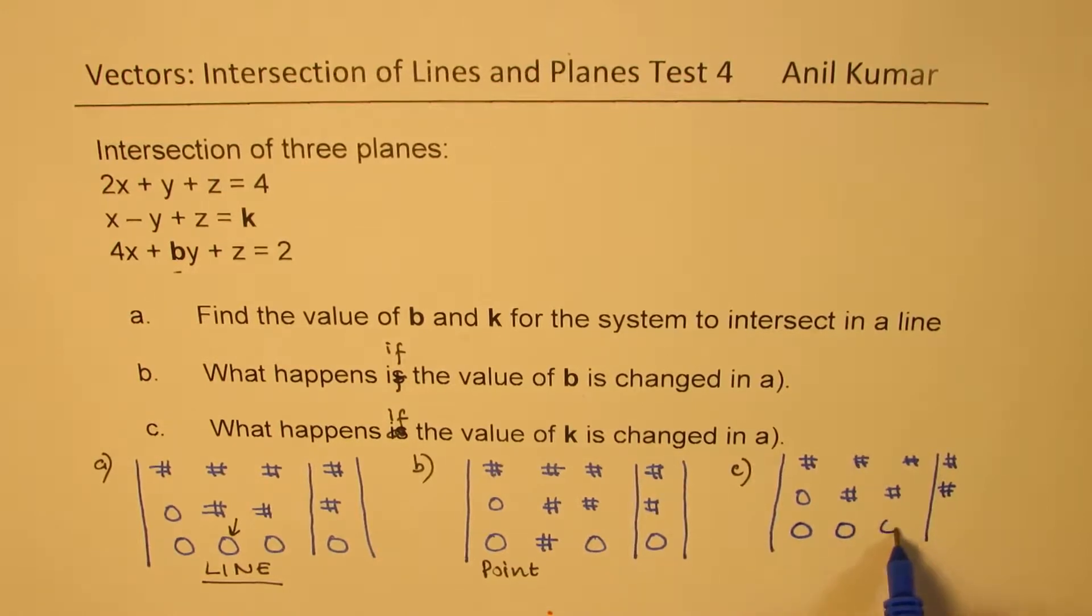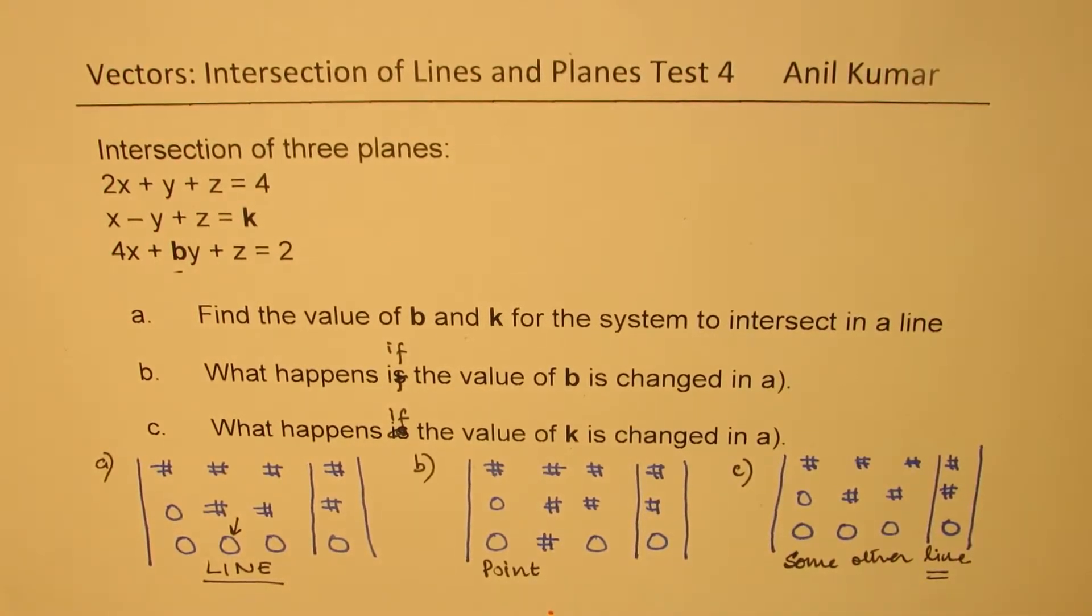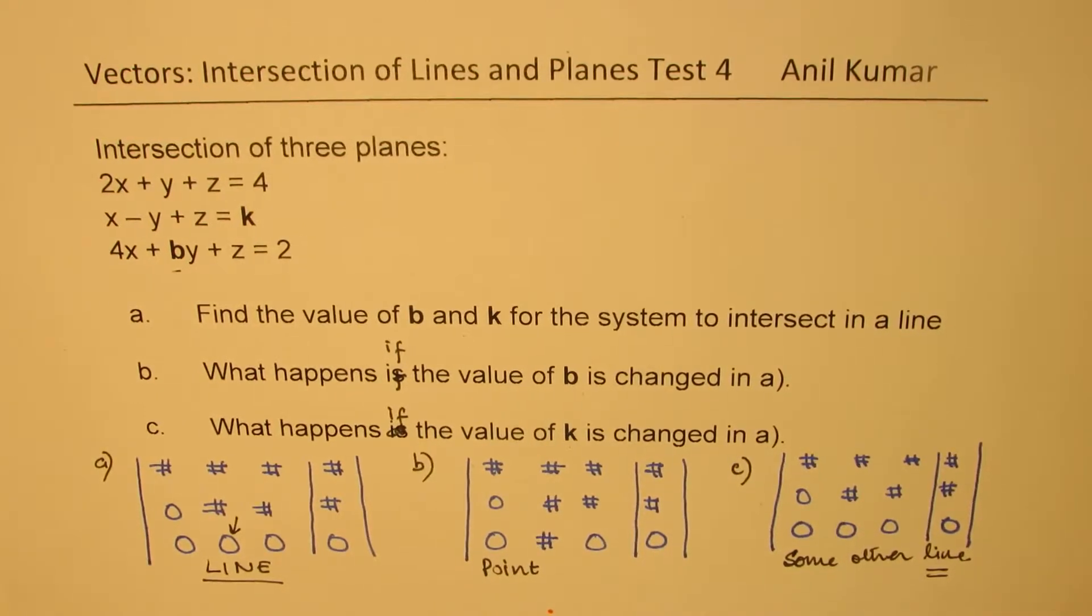And here, what we get here is 0, 0, 0 equals to 0. So that happens. So that may not change anything. So in this particular case, still, we may get some other line. We may get some other line. Now let's try to figure out the solutions.